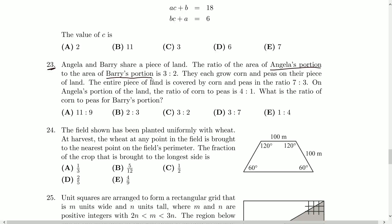They each grow corn and peas on their piece of land. The entire piece of land is covered by corn and peas in the ratio of seven to three. On Angela's portion of land, the ratio of corn to peas is four to one. What is the ratio of corn to peas for Barry's portion?